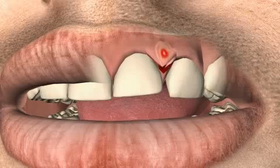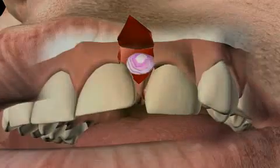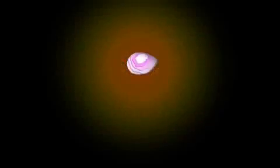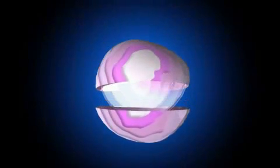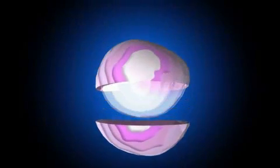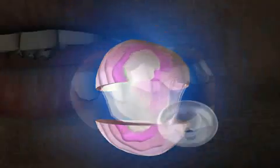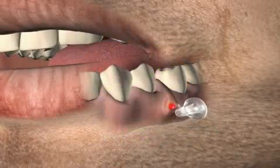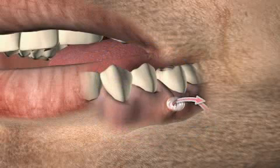Cystostomy is a possible form of treatment for a cyst. A cyst is a cavity within the tissue which is enclosed by a small skin or epithelium, which usually is full of fluid or pulp and which may consist of several chambers. Cystostomy means opening the cyst, whereby the volume of the cyst can be reduced.